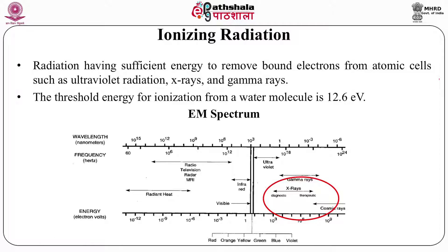In the electromagnetic spectrum, from radio waves up to cosmic waves, all is radiation — but not all is ionizing radiation. It is only above the visible spectrum, starting from ultraviolet radiation, that we talk about ionizing radiation. Below this, radiation is used in television, radar, MRI, and radio wave communication. Though there are debates about harmful effects of mobile radiation, the effect of radio waves on human beings is different from ionizing radiation, and we will not cover microwave or radio wave radiation in this module.